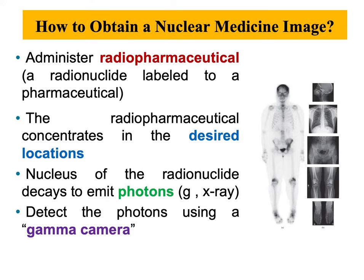If we are looking at the function of a biological process, the radiopharmaceutical agent will be concentrated in that location. So if you are targeting to identify functionality in the liver, you'll find that your radiopharmaceutical is concentrated in the liver, or whatever tissue you are trying to target.